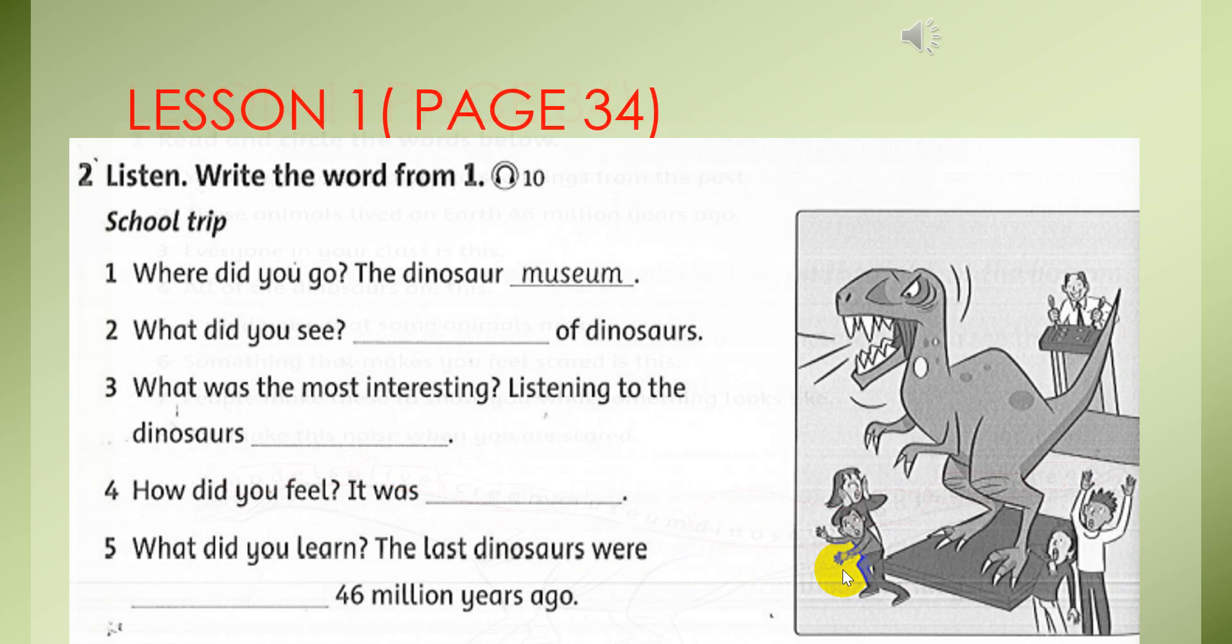And now we move to lesson 1, exercise number 2. You listen and write the word from 1. And now, school trip. Number 1 already, where did you go? The dinosaur museum. And now number 2, 3, 4, and 5, you listen and fill in the blank.